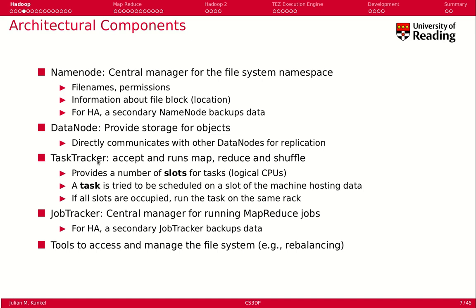The task tracker component allows you to run MapReduce jobs with their individual stages. It provides a number of slots for tasks — a slot is mapped to available logical CPUs. For example, a processor with four cores gives you four slots. A task is tried to be scheduled on a slot on the data node that already holds the relevant data. If all slots on that node are occupied, the task will try to run on the same rack, which relates to the rack awareness we discussed.